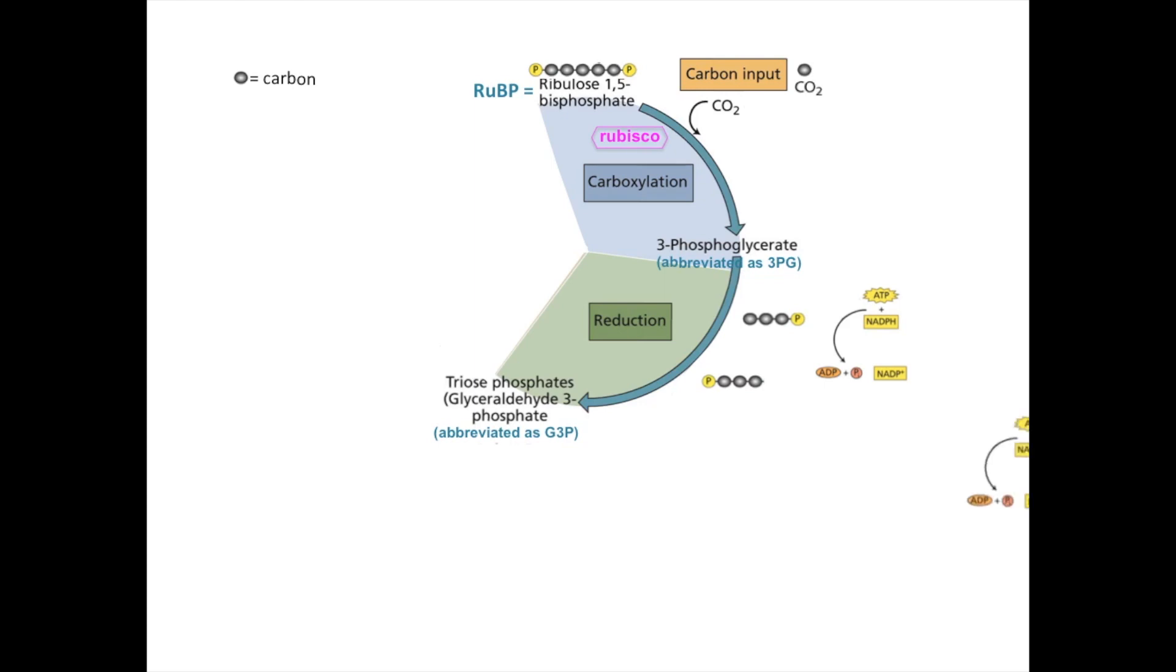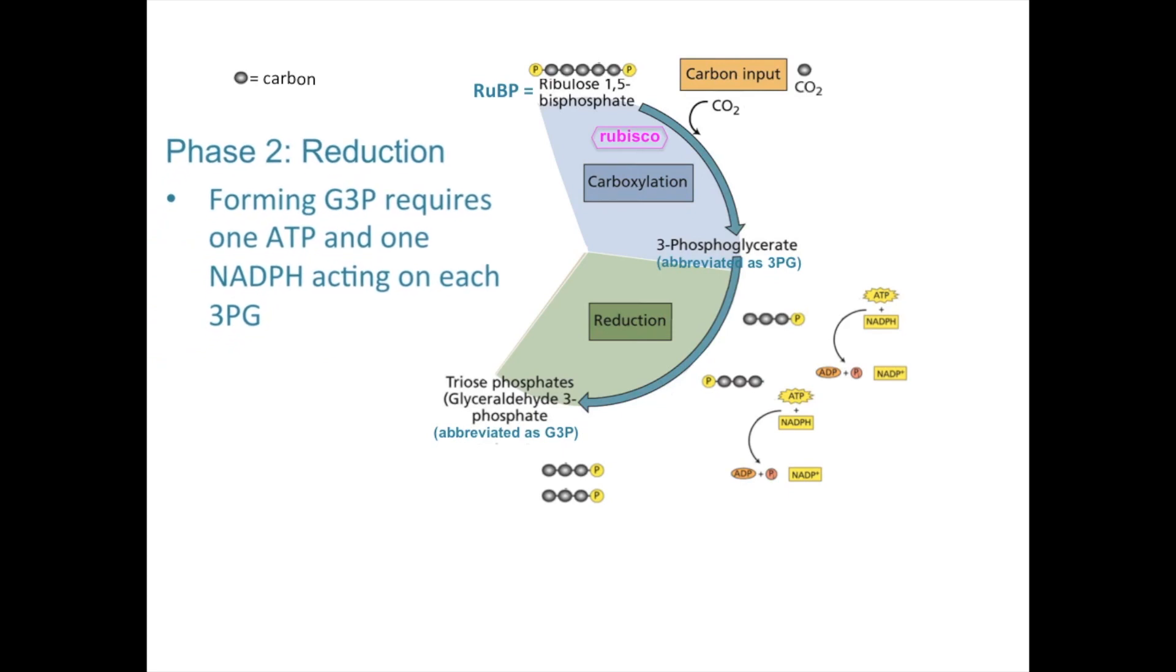So each of the 3PG molecules will become reduced by NADPH and phosphorylated by an ATP. So again, we are going to do this for each one of the 3PGs. So in total for this phase, we use up two ATPs and two NADPHs. After these two 3PGs have gone through this reduction phase, we end up with two G3Ps. And G3P is short for triose phosphates or glyceraldehyde 3-phosphate. And those are the basics I want you to take away from the reduction phase, meaning we are just thinking about how we take these two 3PGs, they get reduced by NADPH, they get phosphorylated by ATP, and now they have transformed the 3PGs into two G3Ps.